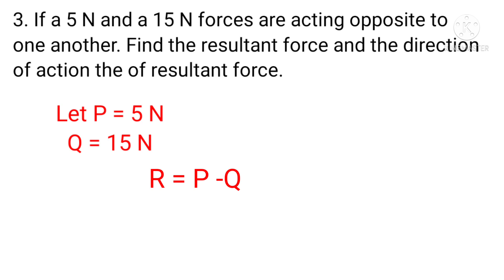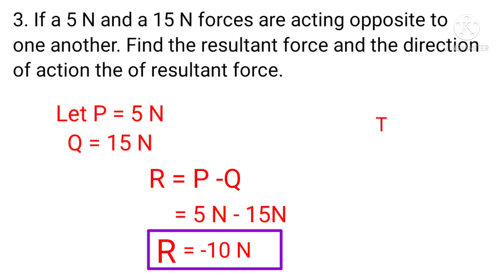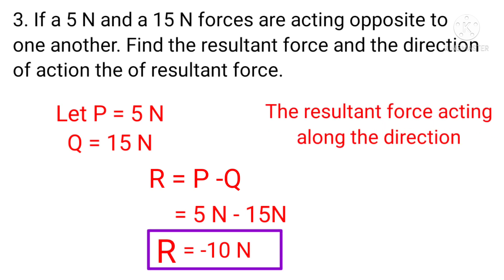So R = P minus Q, that is R = 5N minus 15N. Therefore, R = minus 10N. The resultant force R is equal to minus 10N, acting along the direction of Q.